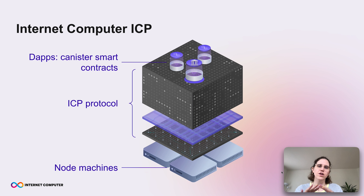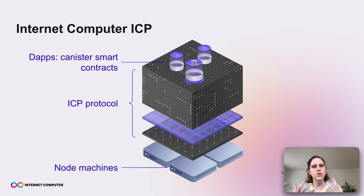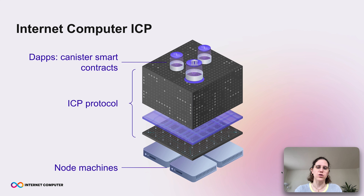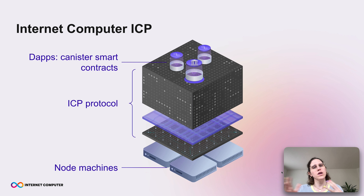The Internet Computer consists of many layers. At the lowest layer we have the node machines — these are the physical machines where the code is being run. Afterwards there are a lot of layers defining how these node machines can talk to each other and how they can achieve consensus. This is what we call the IC protocol. And on the very top we have the smart contracts, called canisters on the Internet Computer. You can imagine these are just programs that run code and they can also talk to each other.